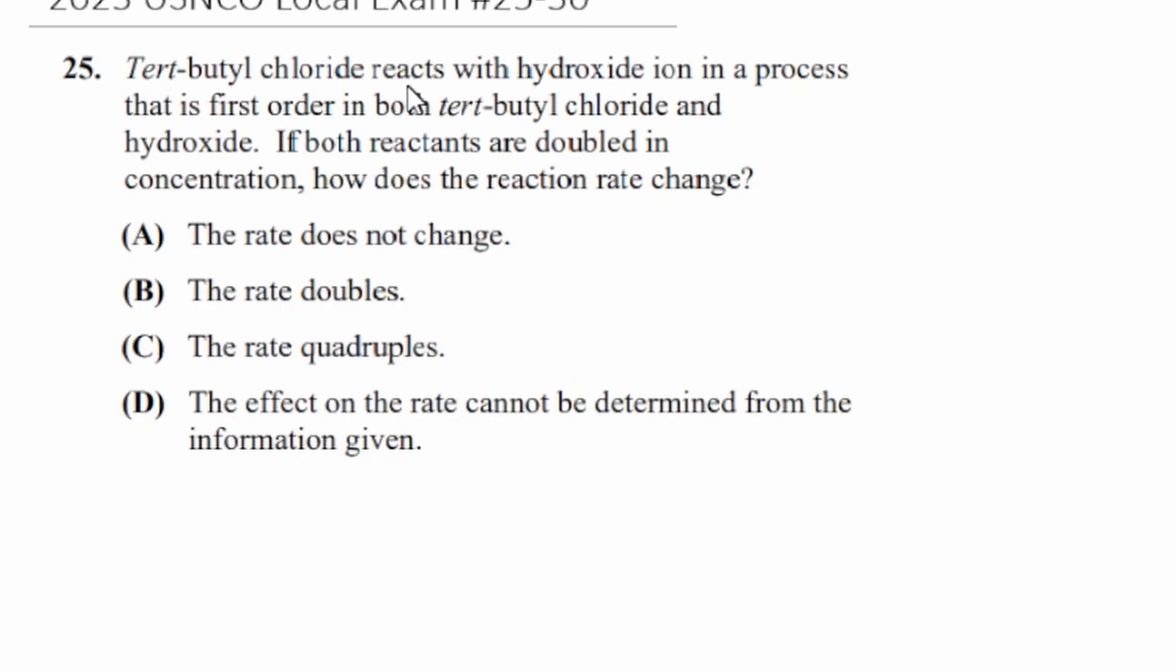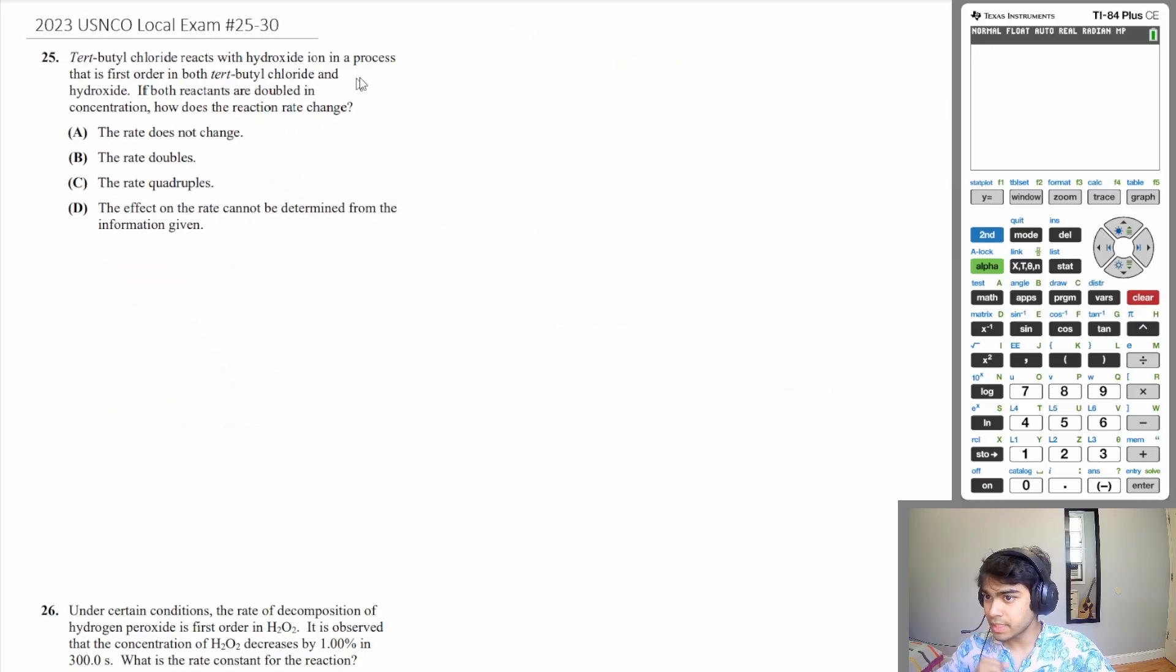All right, question 25. Tert-butyl chloride reacts with hydroxide ion in a process that is first order in both tert-butyl chloride and hydroxide. If both reactants are doubled in concentration, how does the reaction rate change? Well, since the process is first order with tert-butyl chloride and hydroxide, that is an overall rate order of 2. So if both your reactants are doubled, if we do 2 to the second power for the overall order, then that means the rate of reaction is going to quadruple or times 4, which is answer choice C.